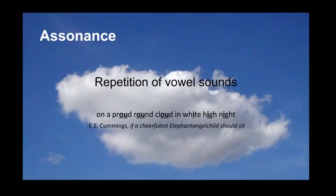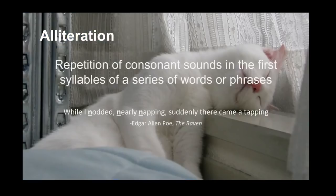Moving on to the next phonetic technique: assonance. Assonance is a repetition of vowel sounds. Let's read out this line: 'On a proud round cloud in white high night.' Now, 'proud' and 'round' do not rhyme, but the vowel sound 'ow' is used repeatedly for the phonetic effect. Similarly, the vowel sound 'I' is used in 'white', 'high' and 'night'.